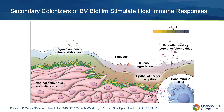Some of these secondary colonizers to the BV biofilm, particularly Fannyhessa vaginae and Sneathia species, can stimulate a strong host immune response from vaginal epithelial cells, leading to localized cytokine and beta-defensin production. This host immune response may contribute to the symptoms of BV that women experience, as well as adverse health outcomes.